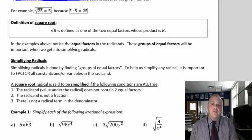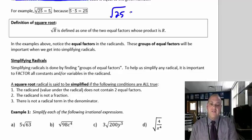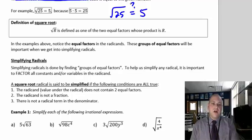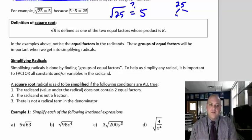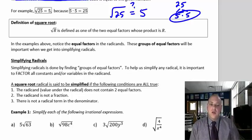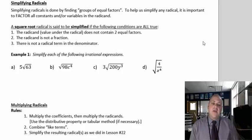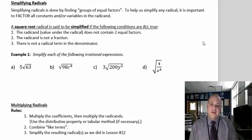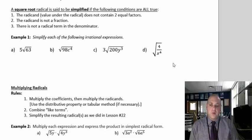Radical R is defined as one of the two equal factors whose product is R. So, why is the square root of 25 equal to 5? Because if you factor 25 — 5 times 5 — whatever one of those pair of factors is, that is the square root by definition. So what we're going to do to simplify radicals — you may have learned this a different way last year — I'm going to show you a way that might be easier for you to factor and break down these square roots.